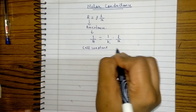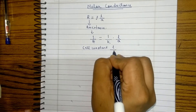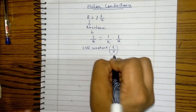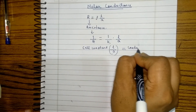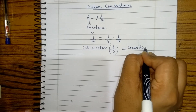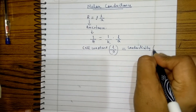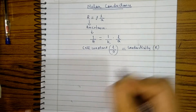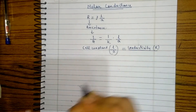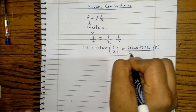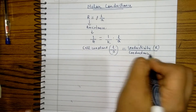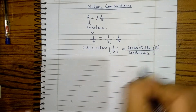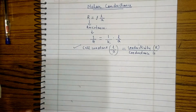The cell constant L by A is equal to conductivity — that is, specific conductance represented as kappa — divided by conductance G. This we have already learnt.